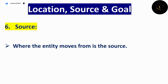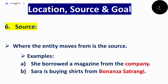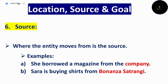Source کیا ہے؟ Entity یا participant کہاں سے move کر رہا ہے، یا اس نے وہ چیز کہاں سے حاصل کی — that is source۔ 'She borrowed a magazine from the company' — she agent ہے، اور اس نے magazine کہاں سے حاصل کی؟ Company سے — so company is source۔ 'Sarah is buying shirts from Bonanza Satrangi' — Sarah agent ہے، shirts کہاں سے خرید رہی ہے؟ Bonanza Satrangi سے — so Bonanza Satrangi is source۔